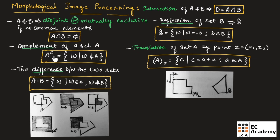The complement of a set A is represented as A^C = {w | w does not belong to A}. The difference between two sets is written as A minus B = {w | w belongs to A and w does not belong to B}.